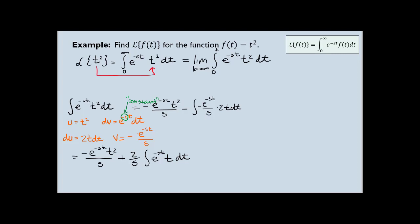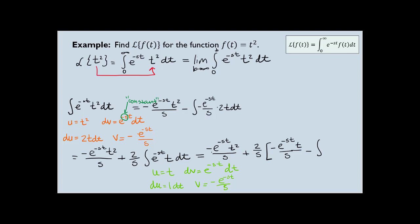For the second integral, we'll have to perform integration by parts again. These are the parts I'm using for the formula. So I copy down the first term — negative e to the power negative st times t squared over s — and then plus. As I apply the integration by parts formula, it's 2 over s in front, and then u times v is negative e to the power negative st over s times t. And then minus the integral of v du, where v is negative e to the power negative st over s and du is dt.